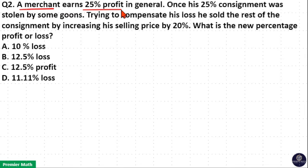A merchant earns 25% profit in general. Once his 25% consignment was stolen by some goons. Trying to compensate his loss, he sold the rest of the consignment by increasing his selling price by 20%. What is the new percentage profit or loss?